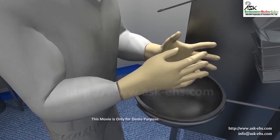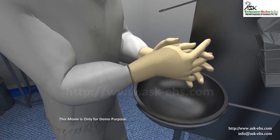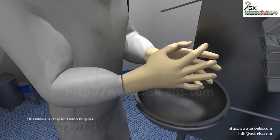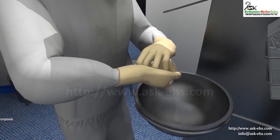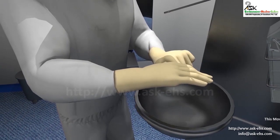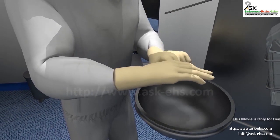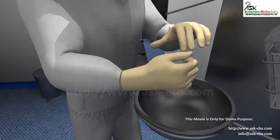Now rub palm to palm with fingers interlaced, then rub the back of fingers to opposing palms with fingers interlocked. After that, do rotational rubbing of right thumb clasped in left palm and vice versa.